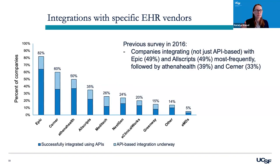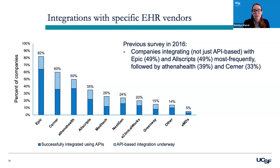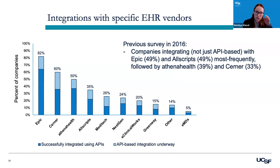We don't have a lot of longitudinal data, but there was a survey conducted in 2016 — a different sample and different methods — where companies were asked about their integrations with different EHR vendors. One thing that seems to have changed over these last seven years is that in 2016, Epic and Allscripts had similar rates of integrations, followed by Athena Health and then Cerner. In our 2022 data, Epic has jumped out of the pack as the most common EHR vendor for integrations, and Cerner is now the second most common — consistent with other market share work.